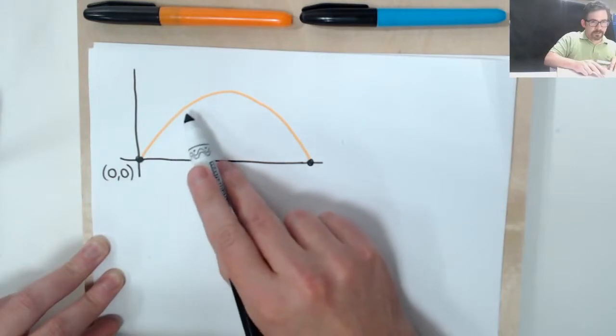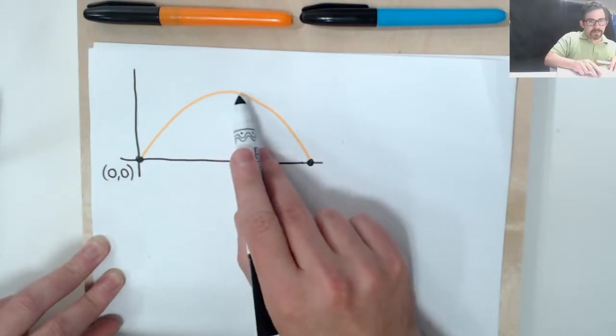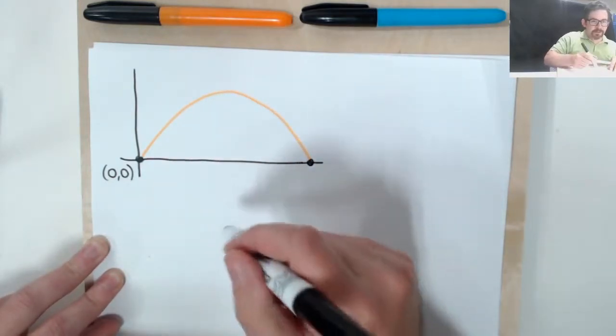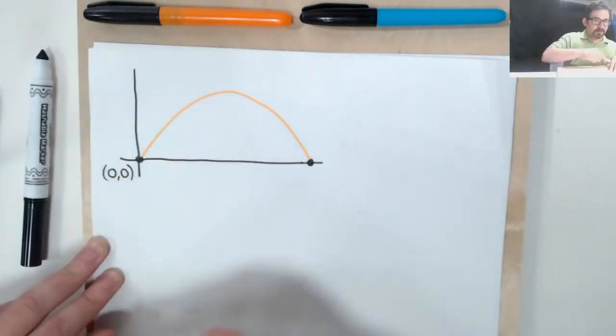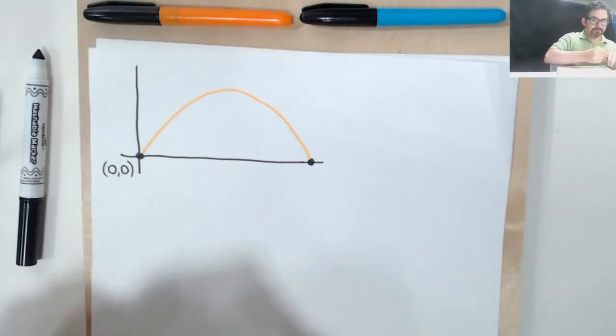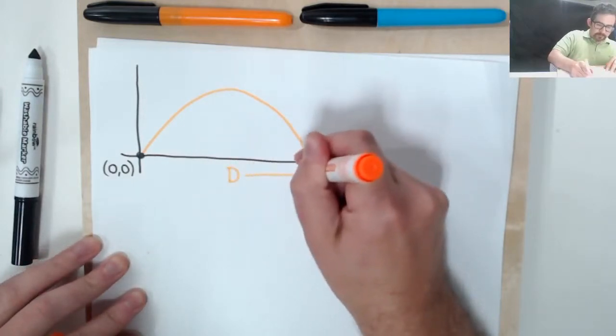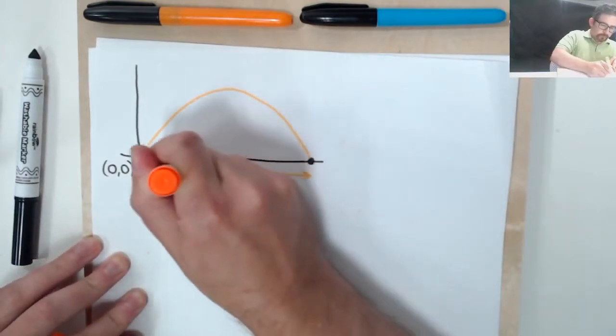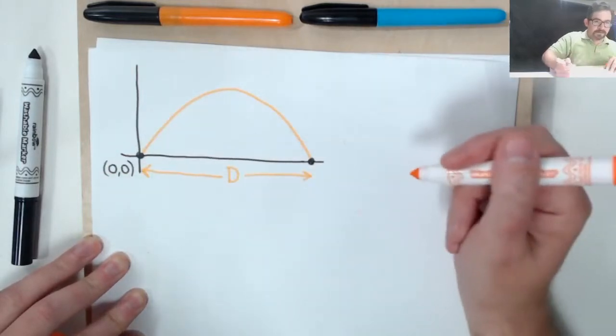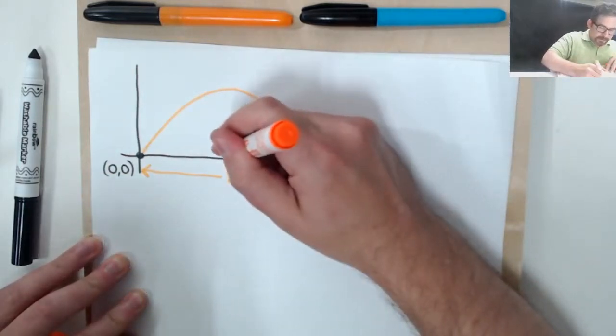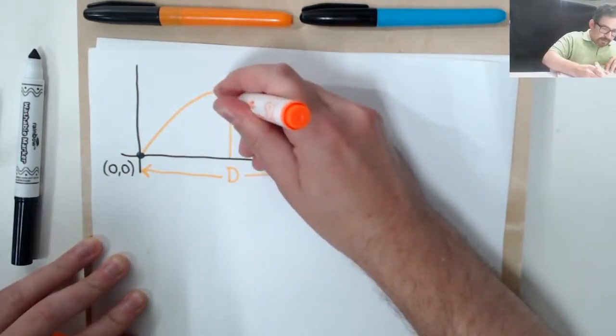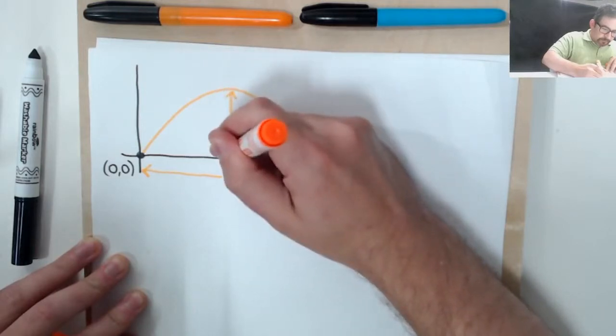Now we know the particle comes up, reaches some apex, and comes back down, and we're going to call the distance that it lands away from there, d. So this distance right here is d, and we're going to call the height that the particle reaches, the maximum height, h.